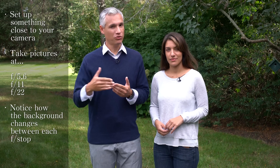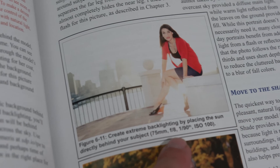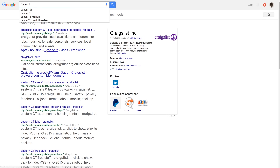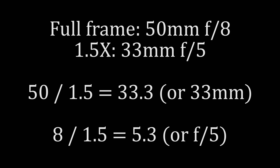You'll understand this better if you practice with your own camera. Pause the video now and set up something close to your camera. Take pictures at f-5.6, f-11, and f-22, and see how the background changes between each of those three photos. When you look at the examples in Stunning Digital Photography, I'll show you the camera settings with a full-frame camera. If you want to create the same background blur on a camera with a smaller sensor, divide both the focal length and the aperture by your camera's crop factor — if you're not sure, just Google it. For example, a 50mm f-8 on a full-frame camera would have the same depth of field as a 33mm f-5 on a camera with a 1.5x crop factor.